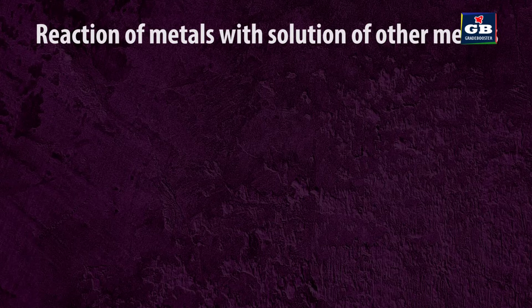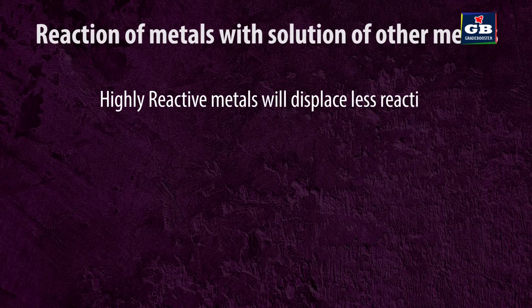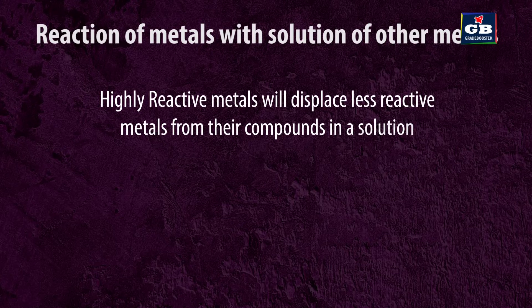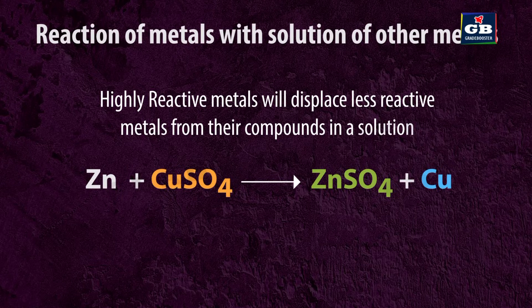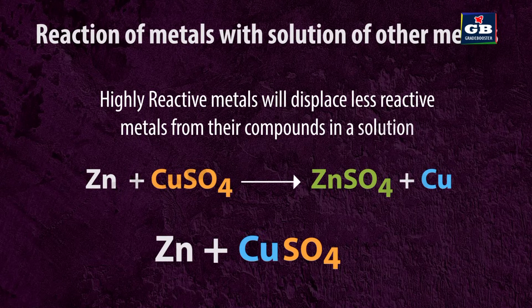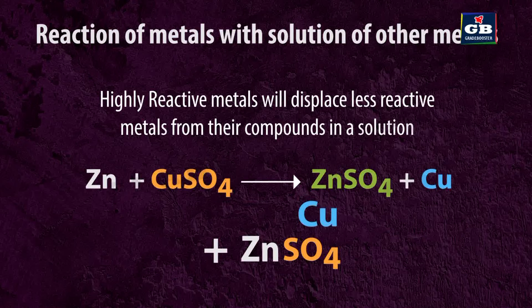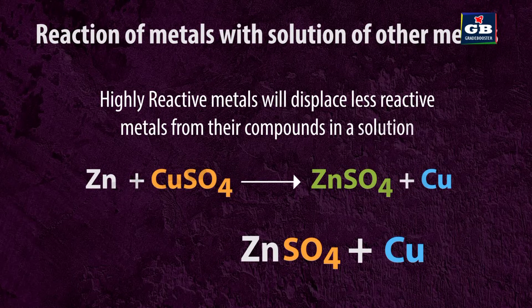Reaction of metals with solutions of other metal salts. Highly reactive metals will displace less reactive metals from their compounds in a solution. For example, zinc reacts with copper sulphate solution and forms zinc sulphate and copper metal, because zinc is more reactive than copper, being higher in the reactivity series.